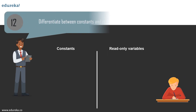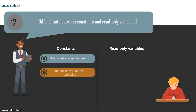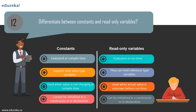Question 12: difference between constants and read-only variables. Constants are static by default and must have a value at compilation time (e.g., 3.14 * 2 + 5) but cannot call methods. Read-only variables must have a set value by the time the constructor exits and are evaluated when the instance is created. Constants are copied into every assembly that uses them. Read-only modifier can only be used for instance or static fields; you cannot use the read-only keyword for variables inside methods.